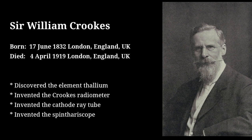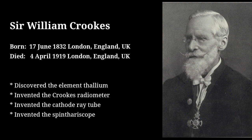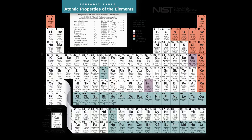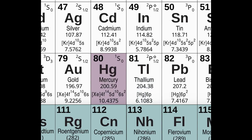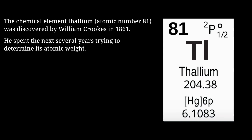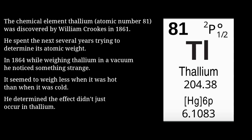In 1864 Crookes was trying to determine the atomic weight of thallium when he noticed something strange. While weighing samples of thallium in a vacuum, he noticed that they weighed less when they were hot than when they were cold. He thought he may have found a connection between heat and the force of gravity, so he started on a long series of experiments to carefully investigate the effect.